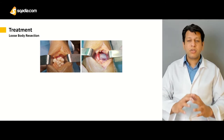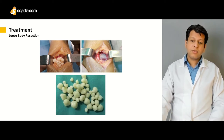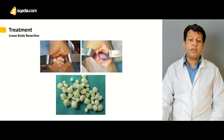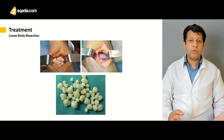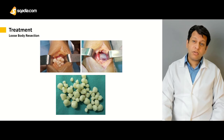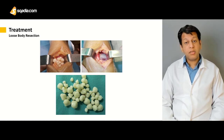Sometimes you can appreciate multiple loose bodies, and as you can see there is no clear-cut shape — they may be of variable shape, variable size, and the number may also be variable. They may be in the hundreds or even thousands, or there may be only one, two, or three present. Size is also not a limit; they may be as small as a few millimeters or sometimes as large as two to three centimeters.